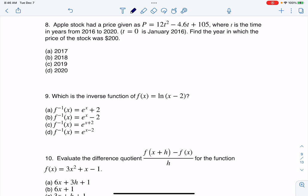Okay everyone, let's take a look at our next multiple choice question. Apple stock had a price given as this quadratic equation, where t is the time in years from 2016 to 2020. They're saying t equals 0 is 2016. Find the year in which the price of the stock was $200.